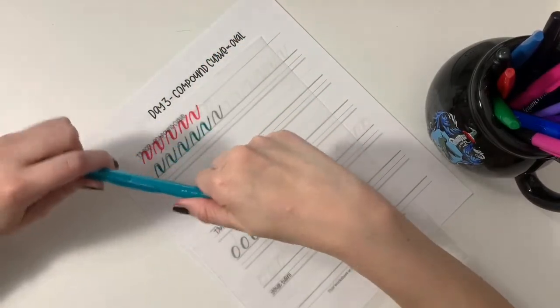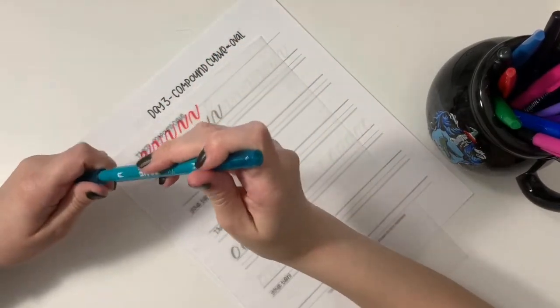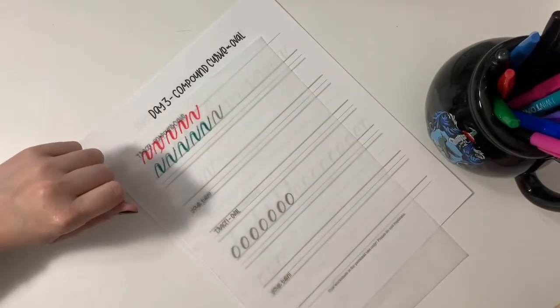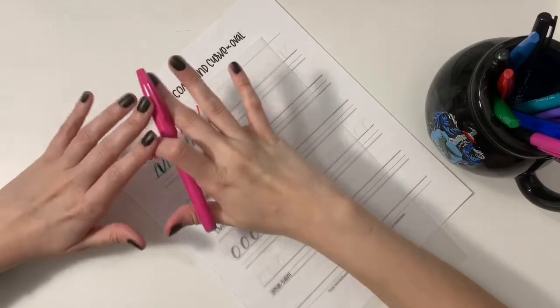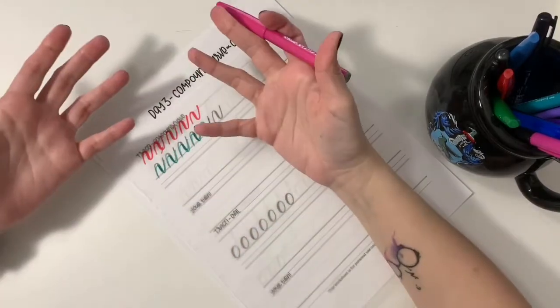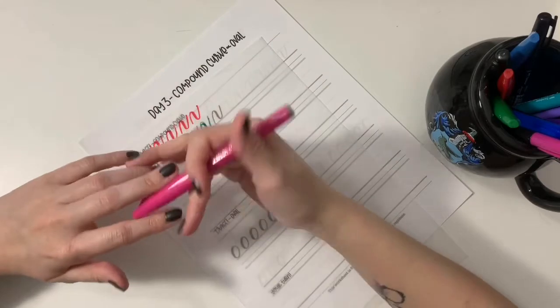Great. Now let's move on to the oval. And before we start this one, I'm going to need you to take a deep breath. This is one of the toughest strokes to learn and it has given me and many other calligraphers a thousand headaches, but it's okay. Keep in mind that you're only starting and the more you practice, the more improvement you'll see.